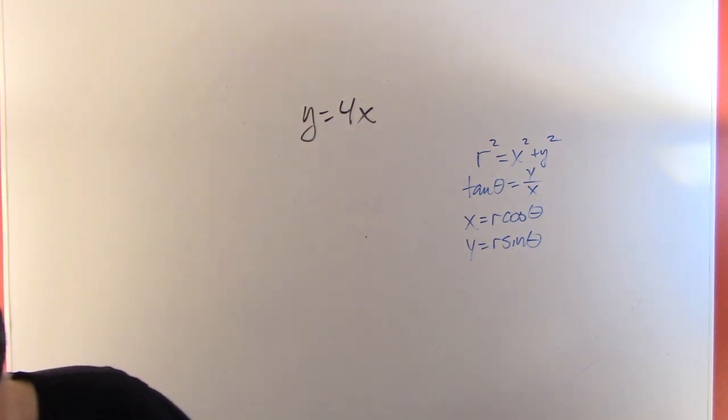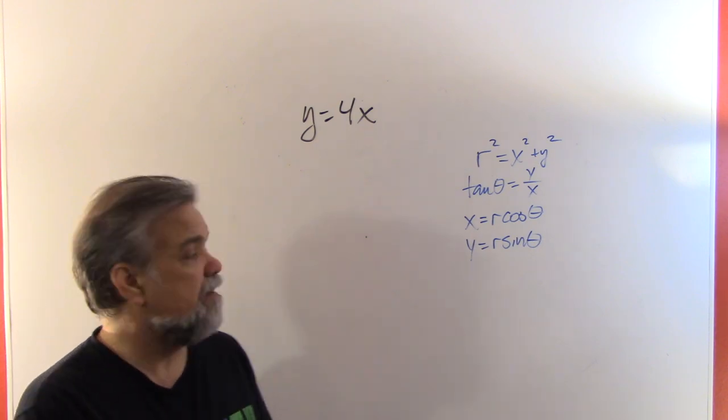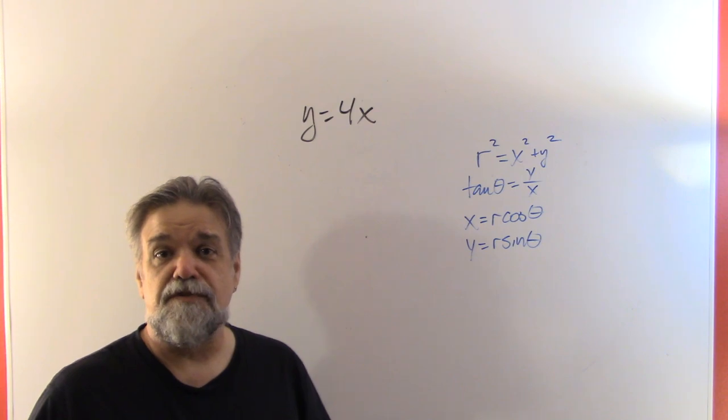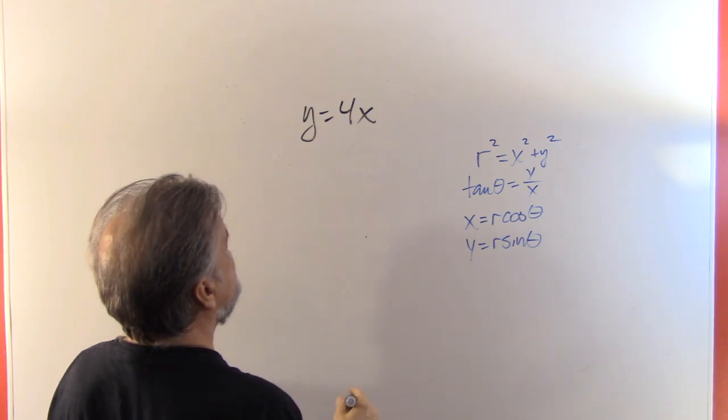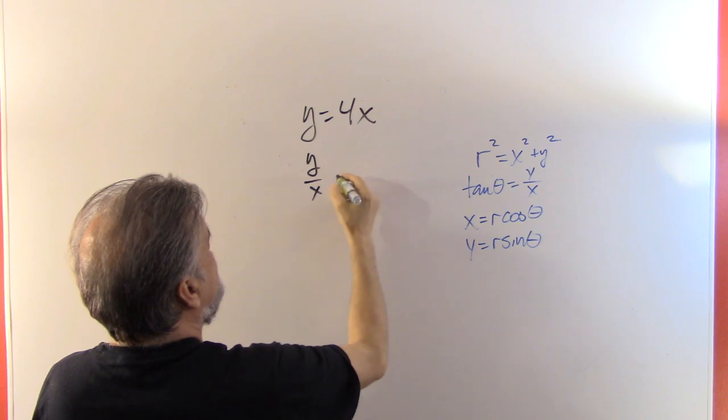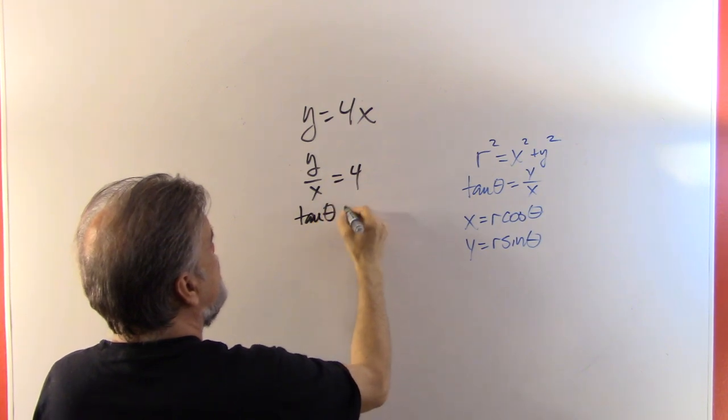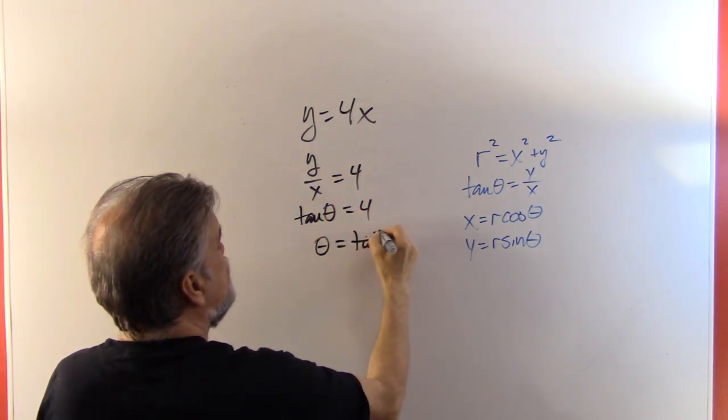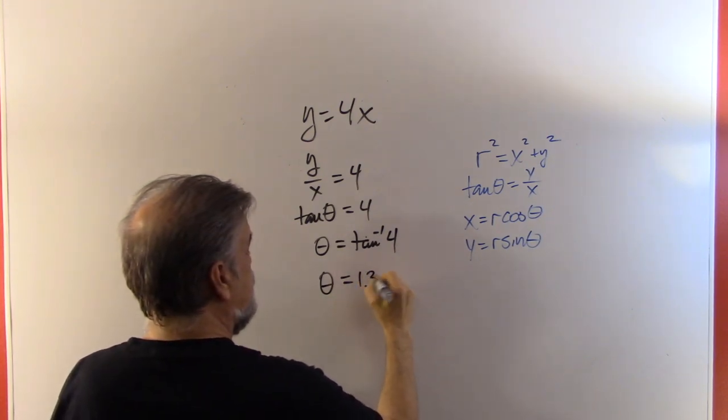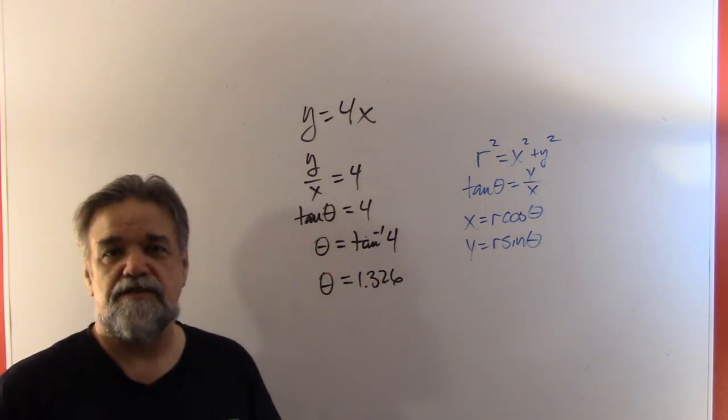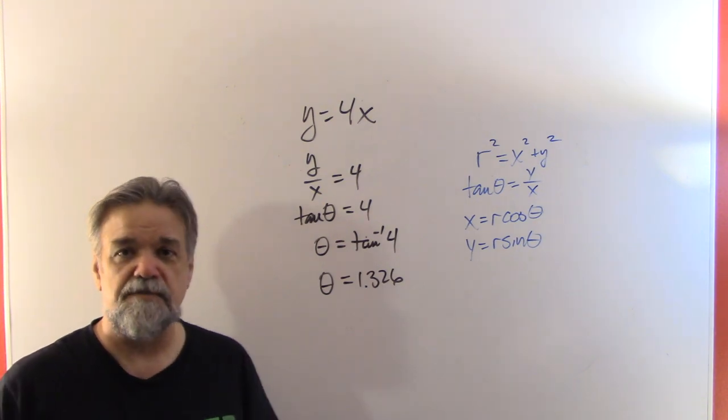And in particular, what we're going to use right now is these last two. On this first one, we're going to use the second one. So what do we do to turn this into polar coordinates? Let's divide both sides by x and we get y over x equals 4. Well, y over x, that's just the tangent of theta. So you get the tangent of theta equals 4. That means theta must be the inverse tangent of 4, which is approximately 1.326 radians. So that's what our equation would look like using polar coordinates is theta equals 1.326. Easy enough.